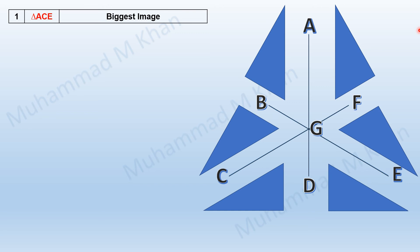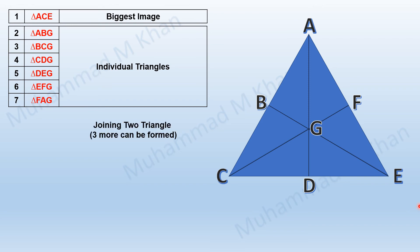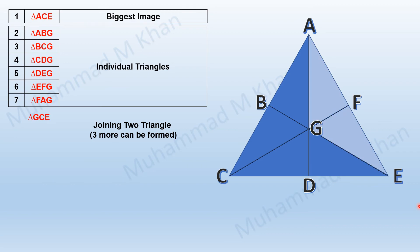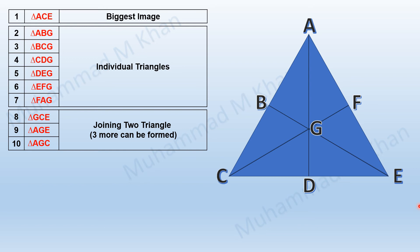Each segment that the lines have made is a triangle itself, so counting these six smaller triangles makes our total seven so far. Triangle ABG, for example, refers to that specific segment. Next, we join triangles that are mirror images of one another — triangles GCE, AGE, and AGC — giving us three more triangles, bringing the total to 10.